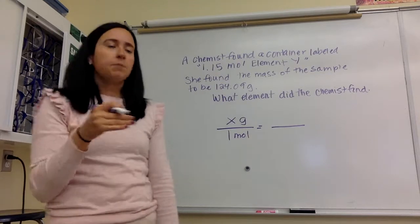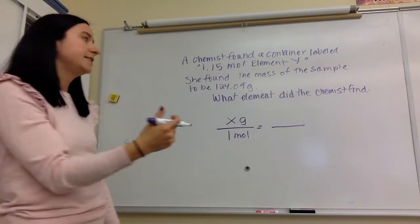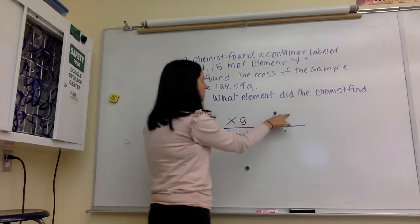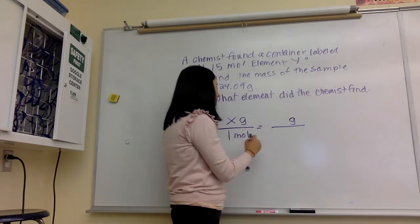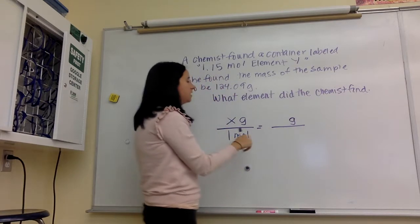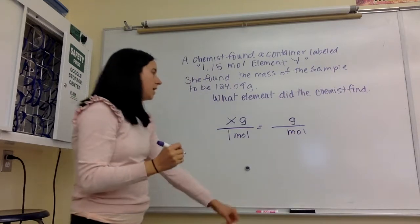Now just like in our previous examples, we need to make sure our units on the left side match the units on the right side. So let's just transfer over those units. So if grams is in the numerator on the left, I know it needs to be in the numerator on the right. And since moles are in the denominator on the left, moles need to be in the denominator on the right.